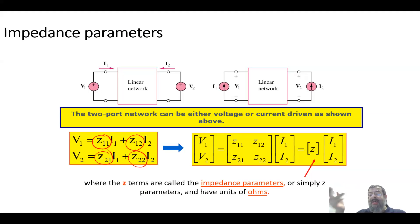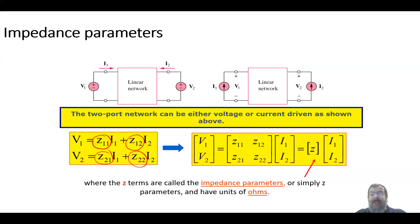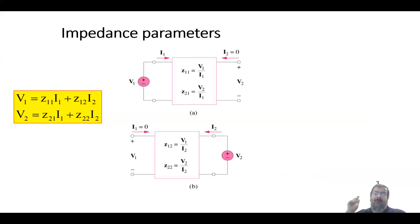There are other types of two-port network parameters — the admittance, the h-parameters, the transmission line — but I won't go over those because I've never seen any exam question on them. The most fundamental one is the impedance parameters. The question is how to find z11, z12, z21, and z22, and it is very straightforward.